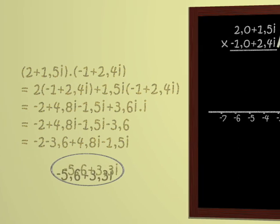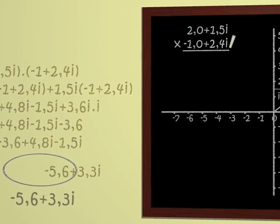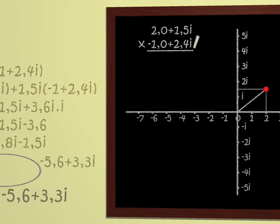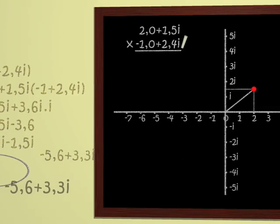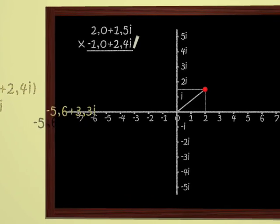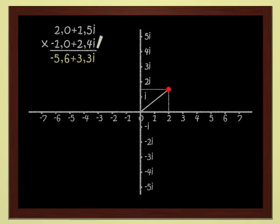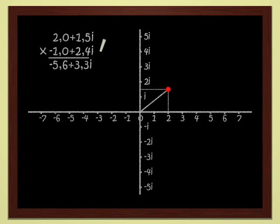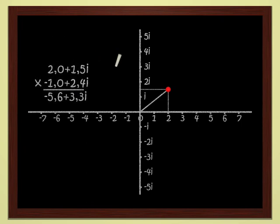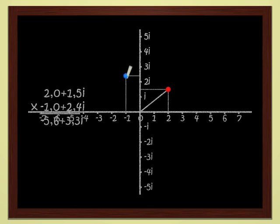In other words, we can multiply points in a plane. That's amazing. We thought that the plane was dimension 2, since two numbers are necessary to locate a point. And now I'm telling you that one number is enough — of course, we changed our numbers and now we are dealing with complex numbers.